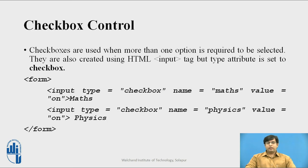Moving forward is the checkbox control. Checkbox is used when more than one option is required to be selected by the user. The input tag is used with the type set to 'checkbox'. The name specifies what option is selected — for example, the name 'math' goes to the server as input for maths and 'physics' goes to the server as input for physics.